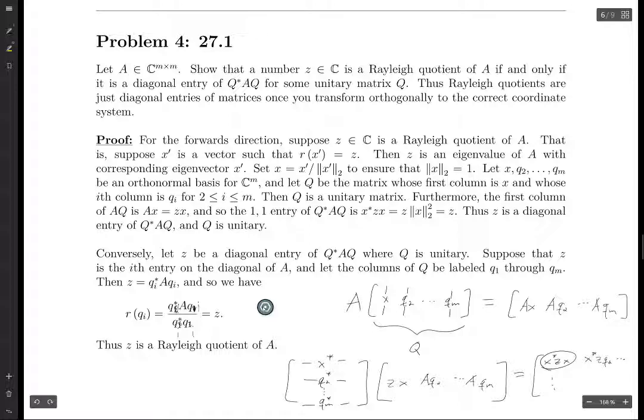And thus, Z is a Rayleigh quotient of A. And so we've proven both directions. And so now we're done with this exercise.